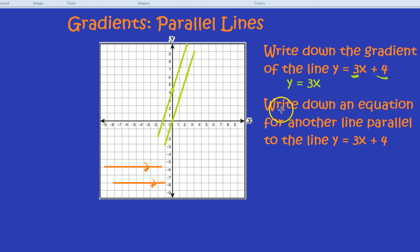So, to answer the next question, write down an equation for another line parallel to the line y equals 3x plus 4. All we need to do is think of any line which has a gradient of 3. An example would be y equals 3x minus 7, or minus 70, or minus 700. Where it cuts over the y-axis doesn't really matter. As long as it's got this gradient of 3, it will forever be parallel to this line y equals 3x plus 4. And they'll never meet. They'll never cross over.